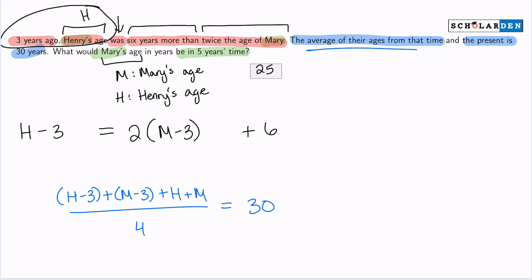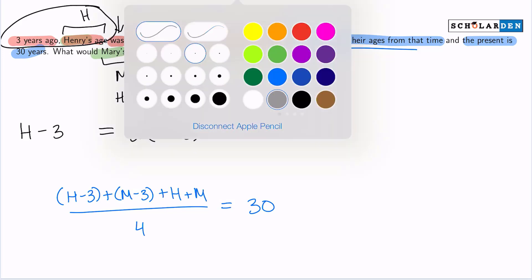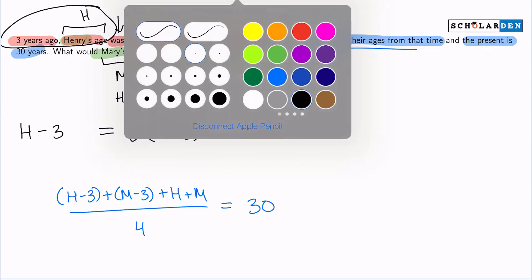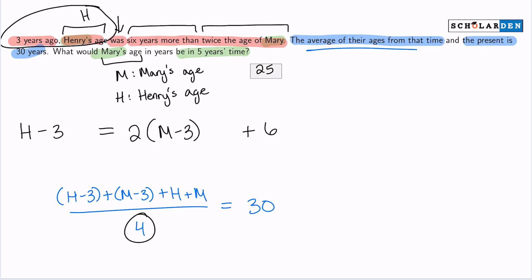Now we can solve this thing. First, I would love to get rid of that denominator of four, just to make sure that I have nice linear equations here. So I'll multiply four onto both sides of my equation, resulting in a cancellation on the left side. 30 times four gives us 120.